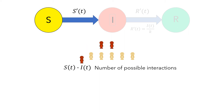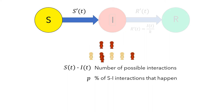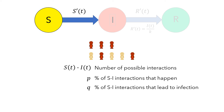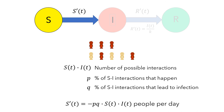Now, in a given day, it's not necessarily the case that each infected person will come into contact with each susceptible person, so we should consider the percent of those interactions that actually happen, which we'll call p. And it's not the case that every susceptible person who comes into contact with an infected person will necessarily become infected, so we should also consider the percent of the interactions that lead to infection, which we'll call q. So if we put this all together, we'll get the rate at which the susceptible group changes in number. Since the size of the susceptible group is decreasing, this rate is negative. To make things look simpler, it's typical to write the letter a instead of p times q, and this a is called the transmission coefficient. So this gives us a rate equation for S'(t).